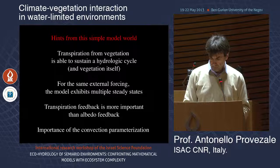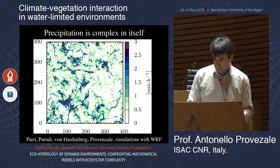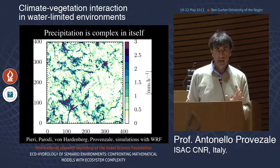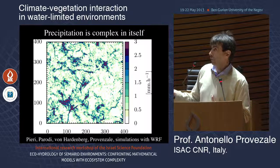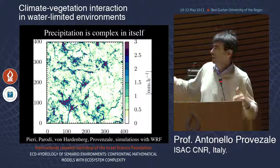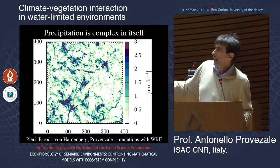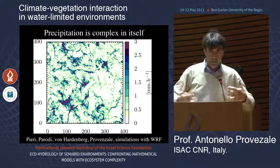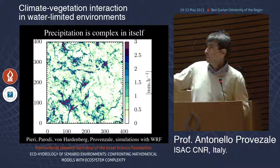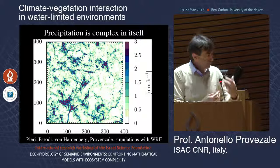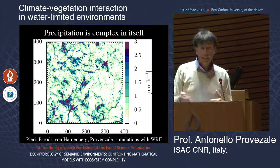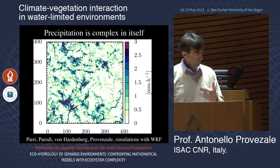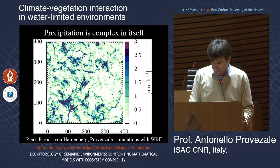Regarding the atmospheric branch: a simulation with WRF over a 400×400 km domain — a fully resolved model with microphysics — shows that precipitation is very localized and dynamical, but it creates large-scale patches. When you add vegetation and non-homogeneous soil and fluxes, this becomes important. These patterns are much larger than the patterns discussed so far, and this aspect is not very well explored.